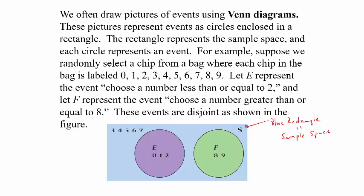Suppose we randomly select a chip from a bag where each chip is labeled with a number 0 through 9 — so there are 10 chips. We let event E represent choosing a number less than or equal to 2, so E contains 0, 1, and 2. Event F is choosing a number greater than or equal to 8, which is 8 or 9. The other elements not in E or F are outside the circles in the Venn diagram. These events are disjoint because the circles do not overlap — they have no common outcome.